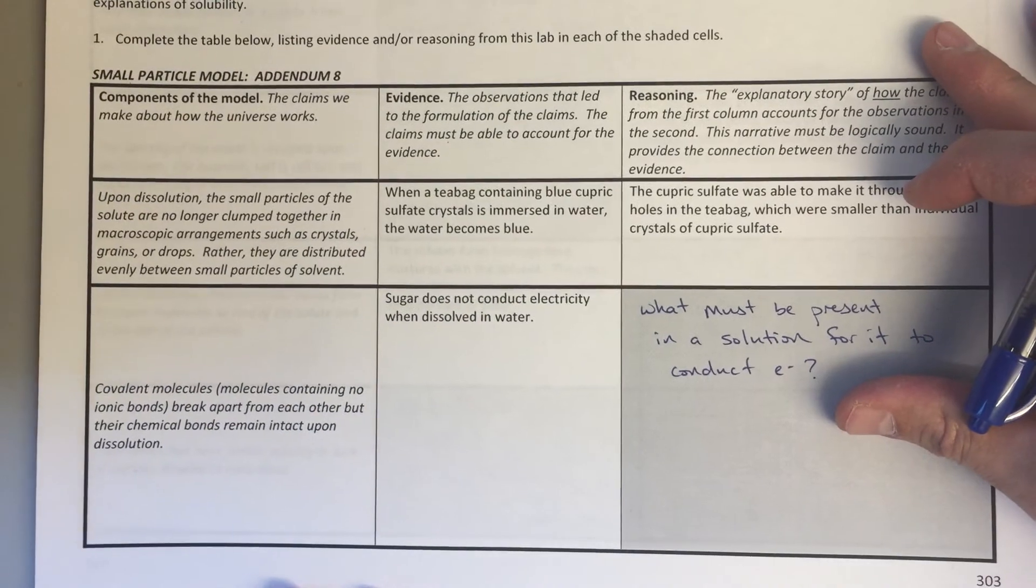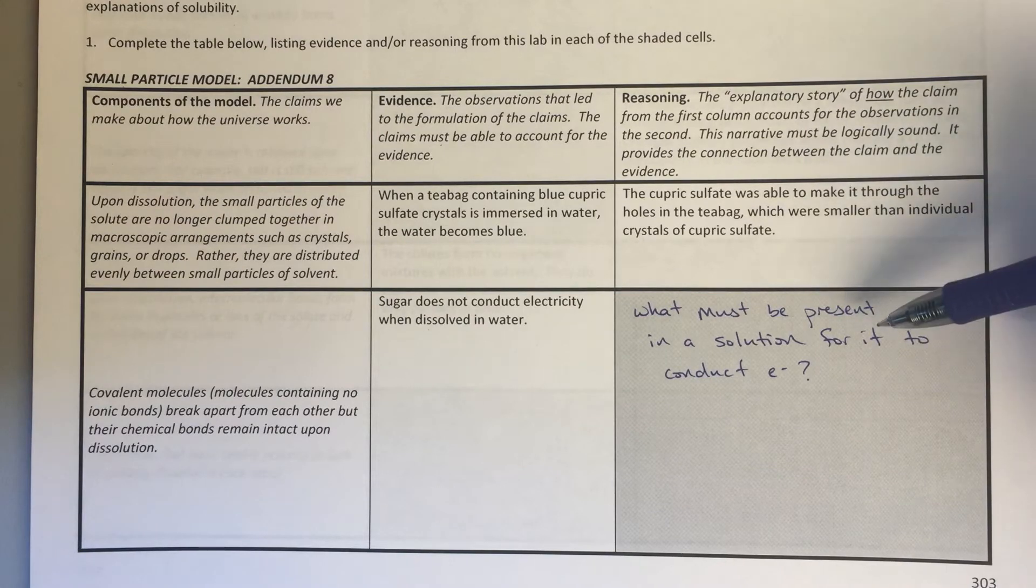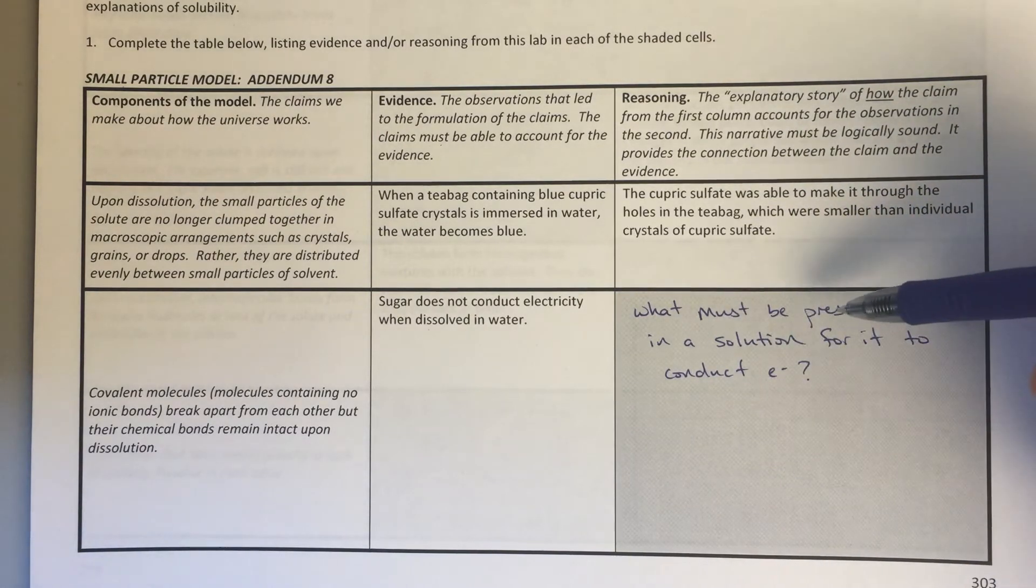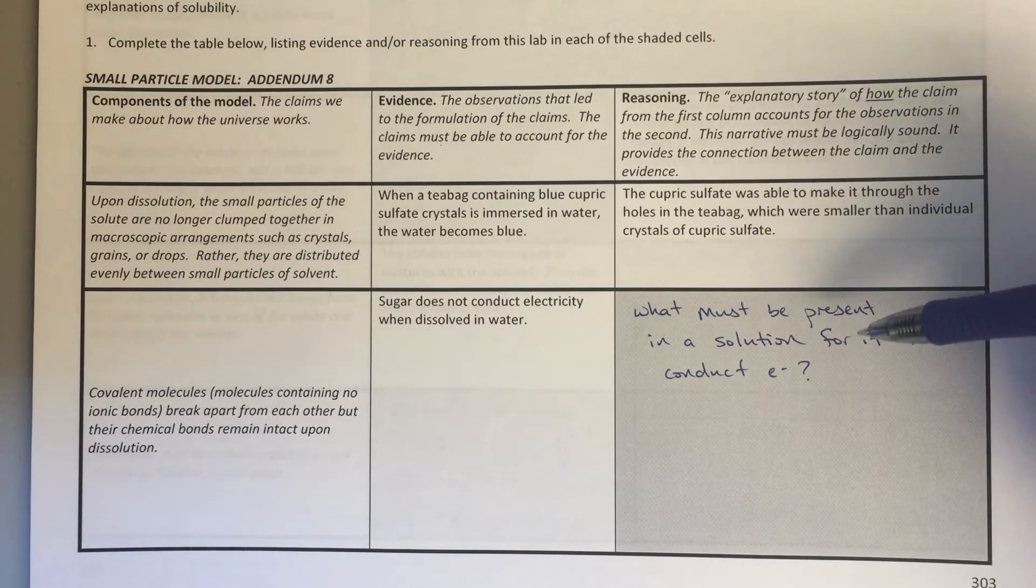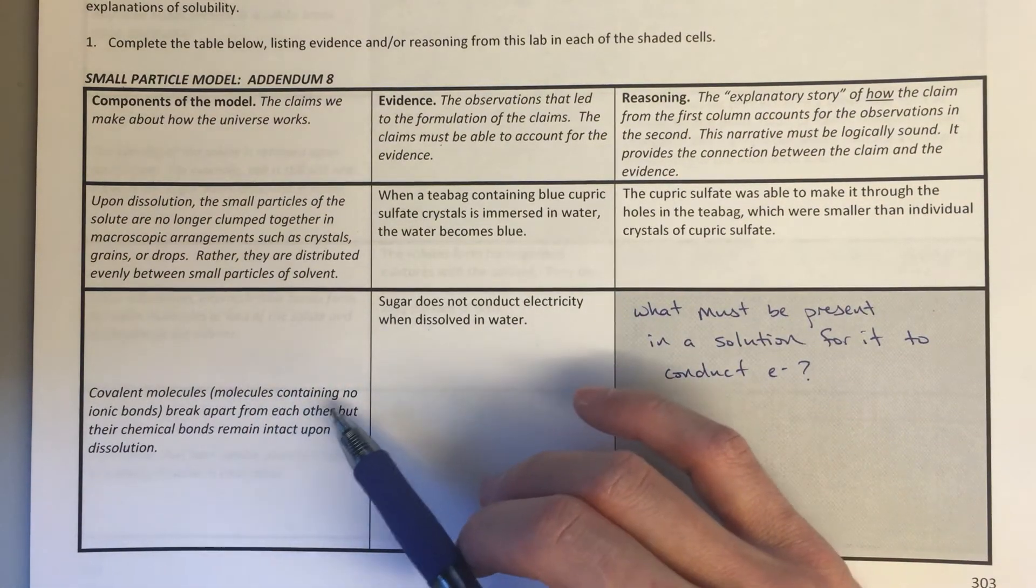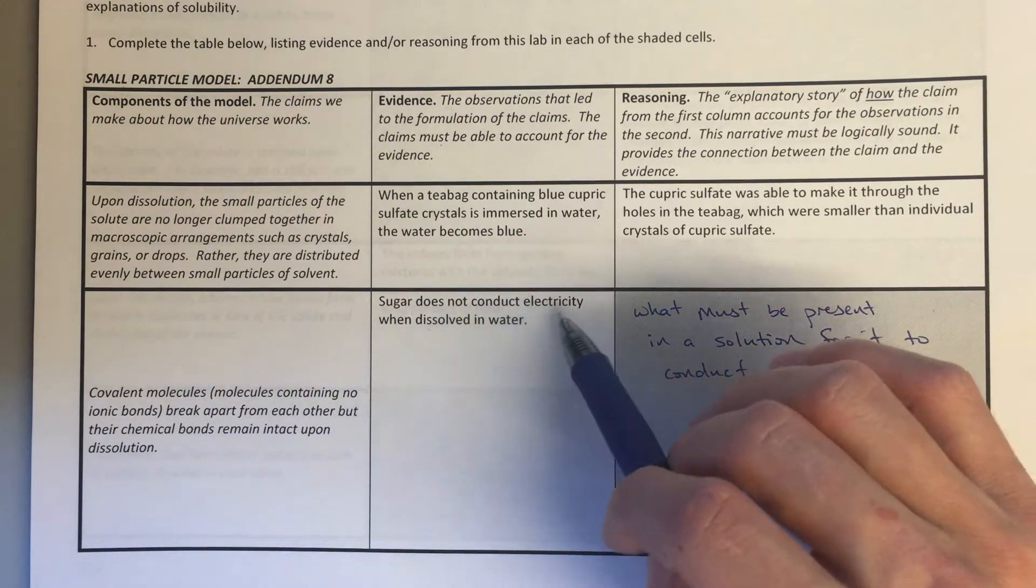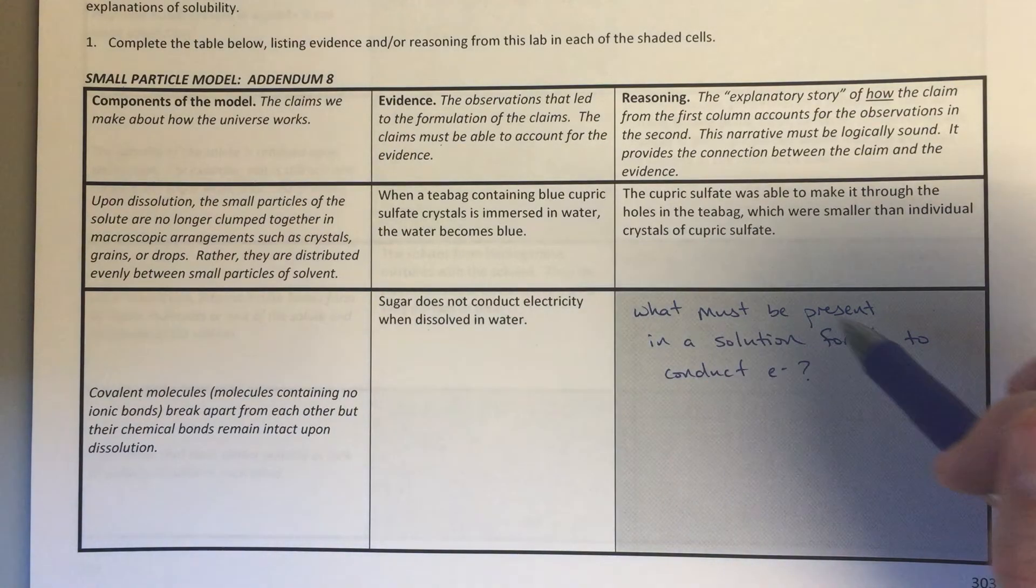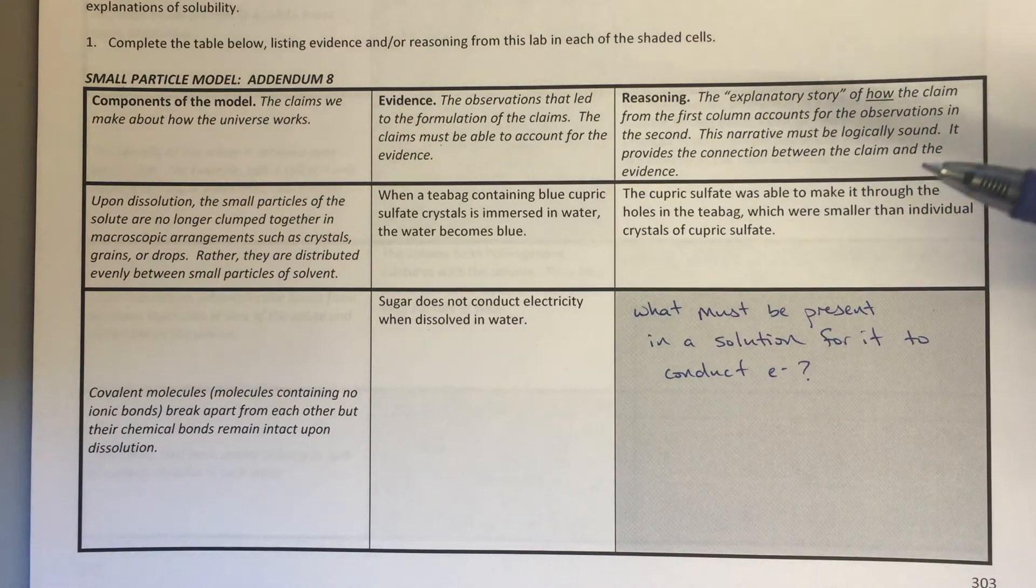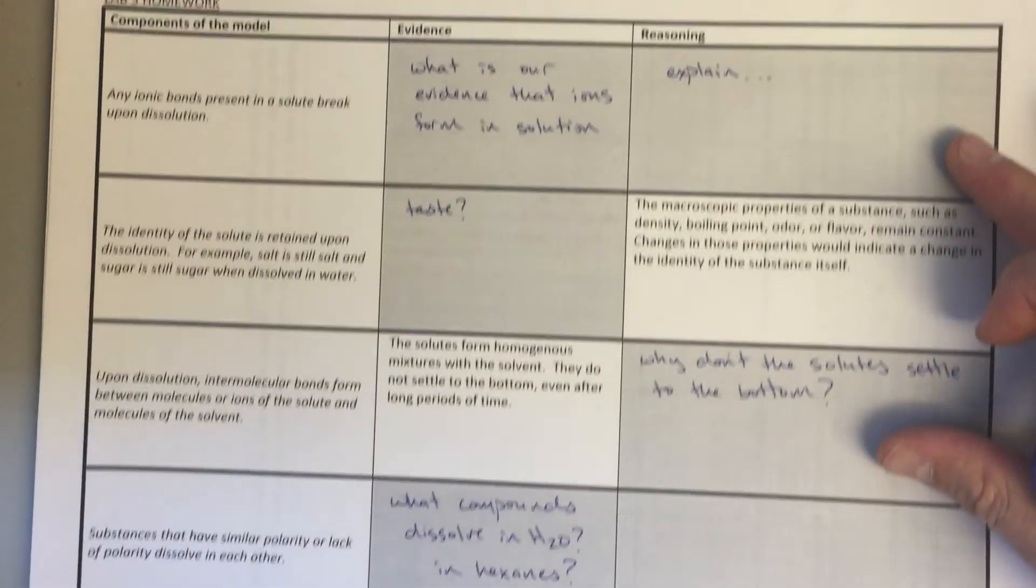Alright, so the next section is our CER table, and for this there's a lot of these this time. The first one, basically what I'm trying to do here is ask you some questions or guide your thinking with some prompting questions, leading questions to fill this out. So the first one here that we need to work on: Covalent molecules break apart from each other, but their chemical bonds remain intact upon dissolution. So the evidence of that—sugar does not conduct electricity when dissolved in water. And the reasoning, I want you to sort of explain—I want you to think about what must be present in a solution for it to conduct electricity and where those ions would come from. Think about that.